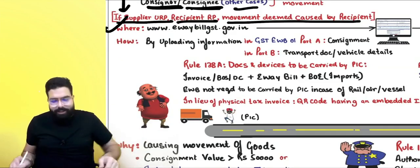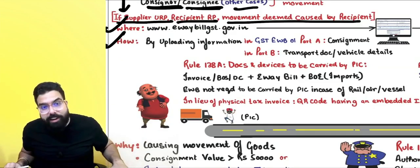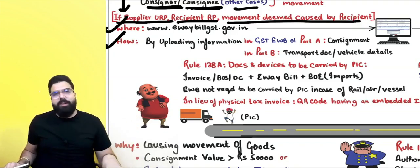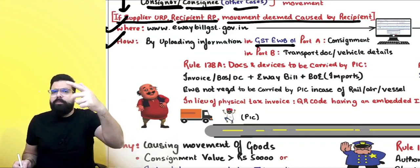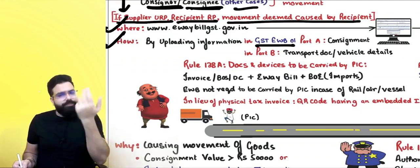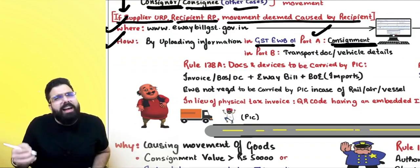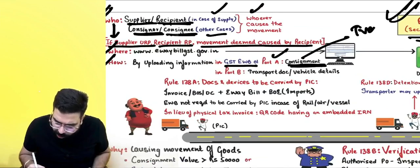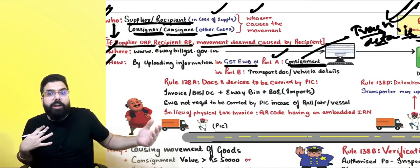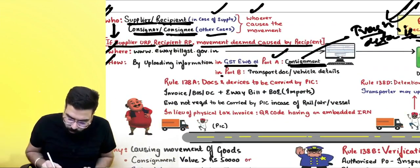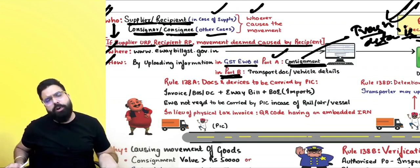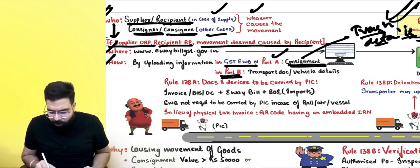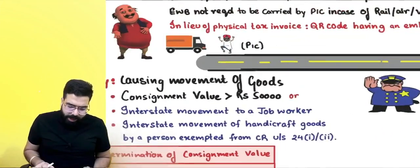The e-way bill must be generated on the portal ewaybillgst.gov.in. It is generated by uploading information in EWB-01 Part A, which contains transaction details — bill from, bill to, and item details (consignment and transaction details: who is sending, to whom, and what items). Part B contains transport-related details — the transport document or vehicle details.